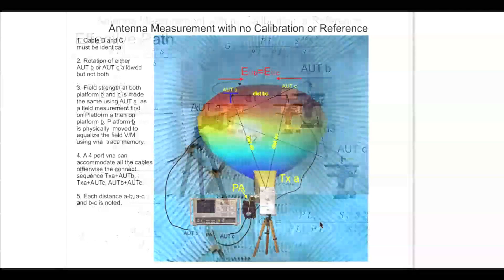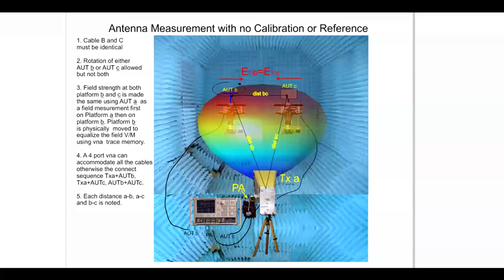Let us assume that we are making these measurements in a chamber and the chamber horn is permanently attached, pointing down to the center of the chamber. We would position the platforms visually symmetrical at about the center of the chamber.